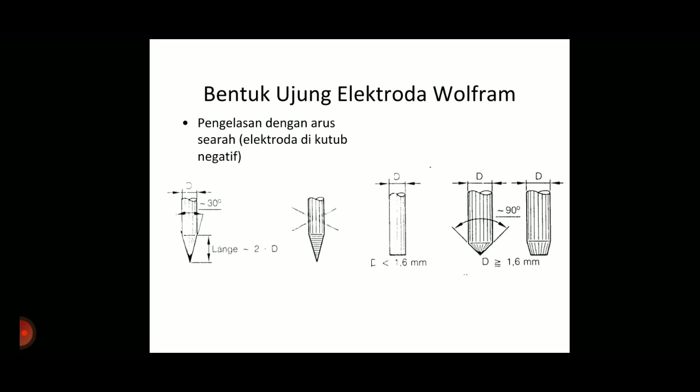Untuk yang tadi dilancip itu arusnya arus DC. Terus elektroda mendapat kutub negatif. Jangan salah, kalau elektroda diberikan kutub positif akan cepat habis tadi. Kalau yang wolfram murni yang tumpul itu arusnya arus AC. Berarti mesin las TIG itu bisa diatur arus DC bila diatur arus AC. DC-nya ini seperti tadi lagi - DC-nya elektroda mendapat kutub negatif atau DC-EN. Jangan sampai keliru, elektroda diberikan kutub positif nanti akan habis.